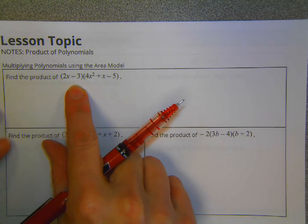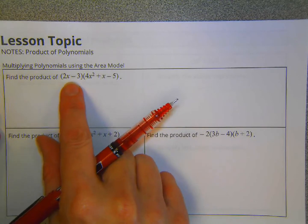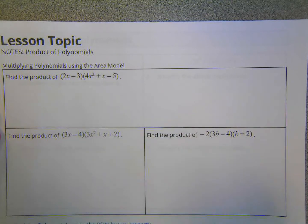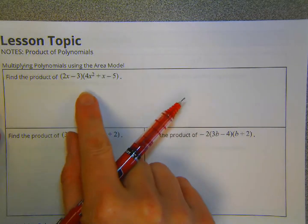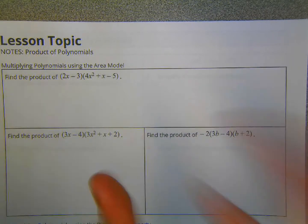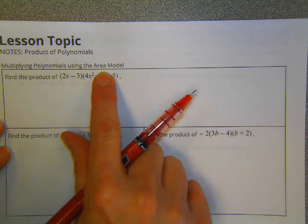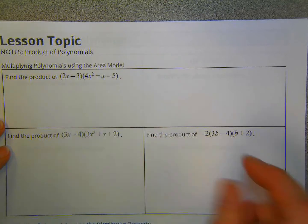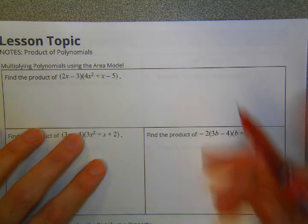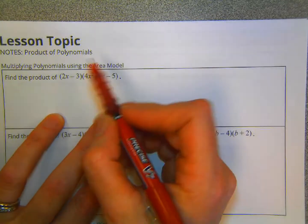This lesson is about the product of a binomial and a trinomial, or a binomial and a binomial, and there are two ways that you can do this, so I'm going to break this into two parts. The first one is the area model. In my experience, kids seem to like that better. It's not my preferred method, but they seem to like that better.